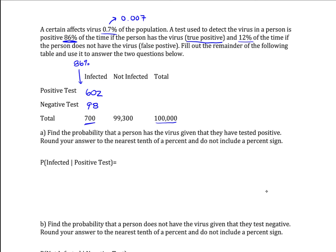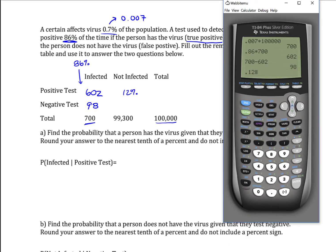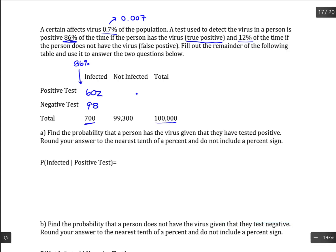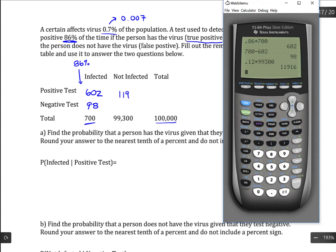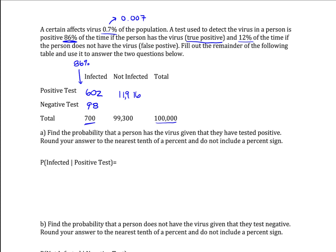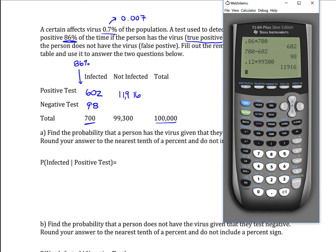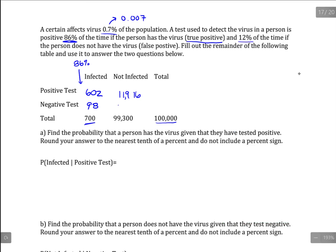Now, 12% of the time, the person does not have the virus — that's a false positive. Someone gets a positive result but is not infected. That happens 12% of the time, but in this population there are 99,300 uninfected people to consider. So 12% times 99,300 equals 11,916 false positives. And 99,300 minus 11,916 gives us 87,384.